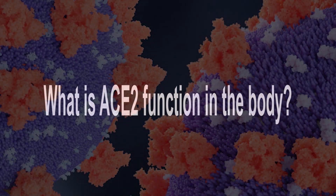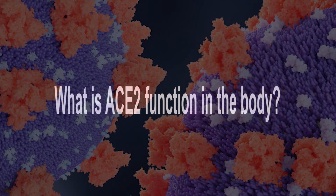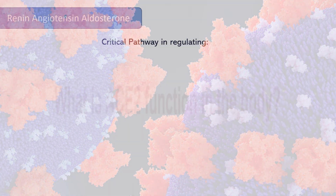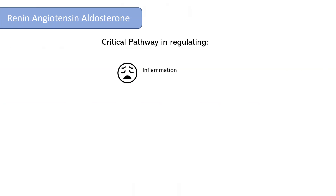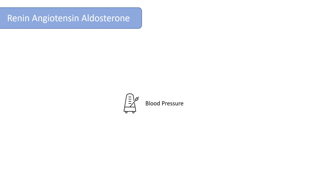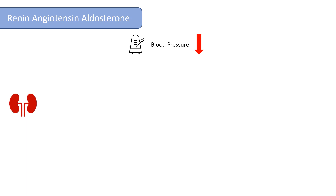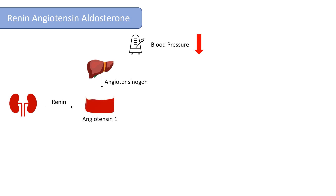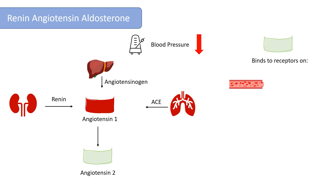But what is the actual function of ACE2 in the body? To answer this, we must review the renin-angiotensin-aldosterone system, a critical pathway in regulating processes like inflammation, wound healing, and most importantly, blood pressure. When blood pressure drops, the kidneys secrete a chemical called renin into the bloodstream. Renin binds to a protein hormone produced in the liver called angiotensinogen, converting it to the inactive angiotensin-1. A second enzyme produced in the lungs, angiotensin-converting enzyme or ACE, converts angiotensin-1 to angiotensin-2, the active molecule that binds to receptors on blood vessels and the adrenal gland, causing vasoconstriction and aldosterone release, resulting in sodium and water retention. The combination of vasoconstriction and salt-water retention raises systemic blood pressure.